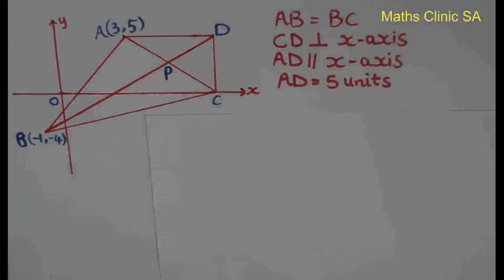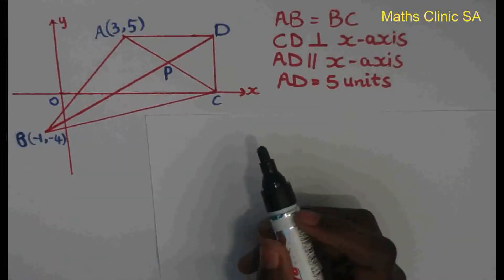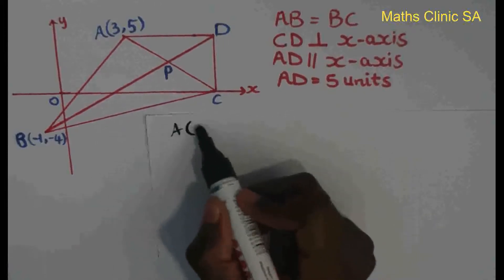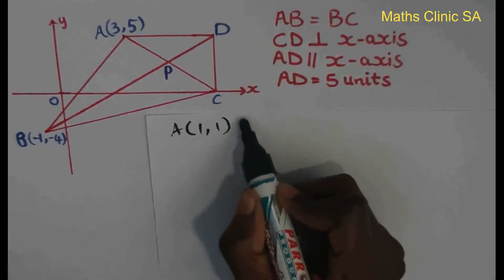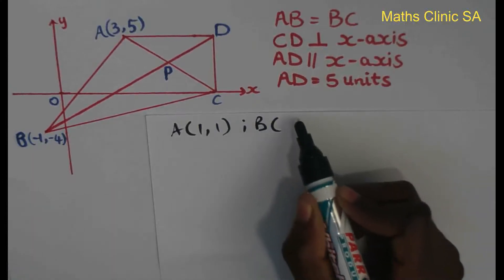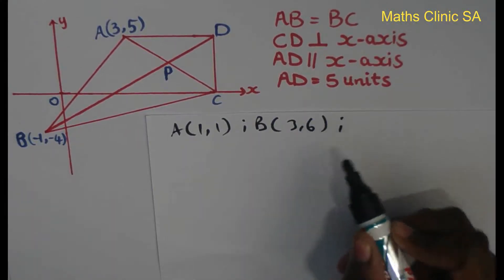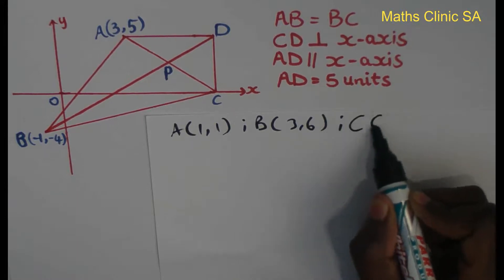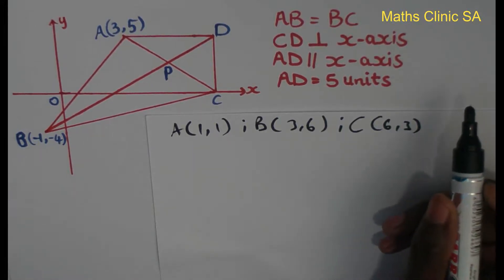Okay, so the question: let's show that triangle ABC with vertices A(1,1), B(3,6), and C(6,3) — I must prove it's an isosceles triangle.